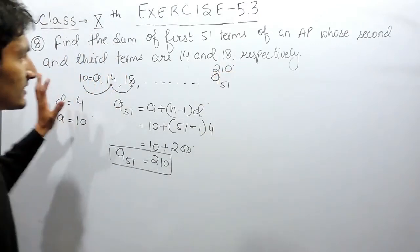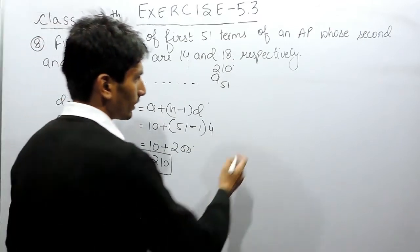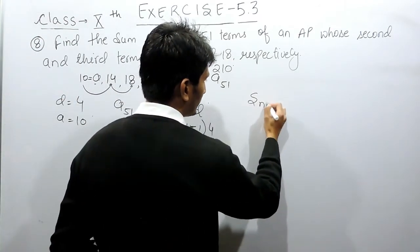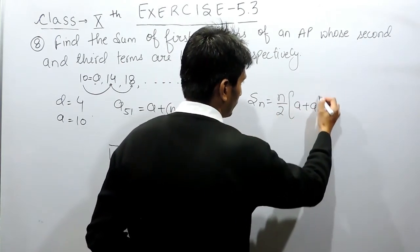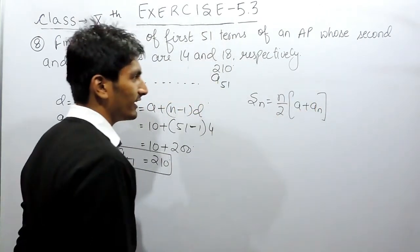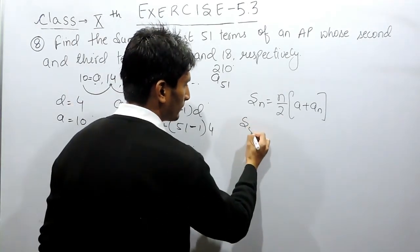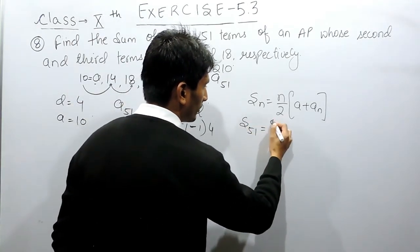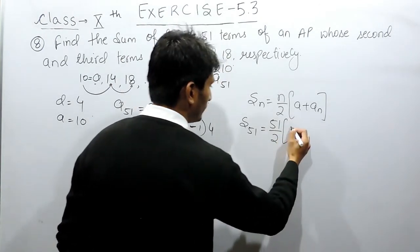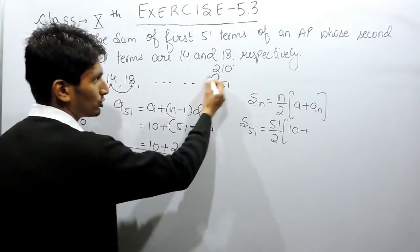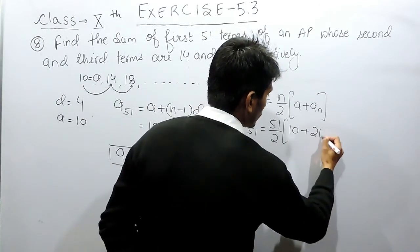Now, you have to find the sum of this AP. To find out the sum of nth term, again we have a formula. We just have to substitute the values here. We have to find the sum of 51 terms. So the number of terms is 51 and the first term is 10 and the 51st term is 210.